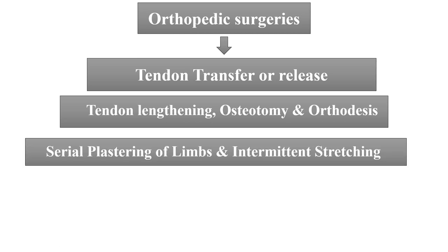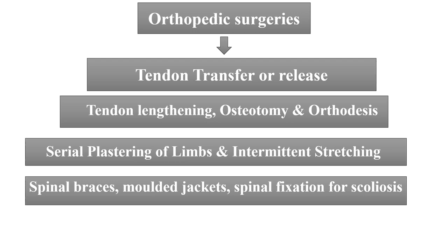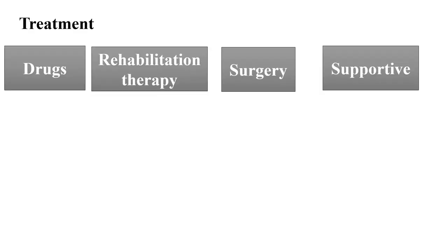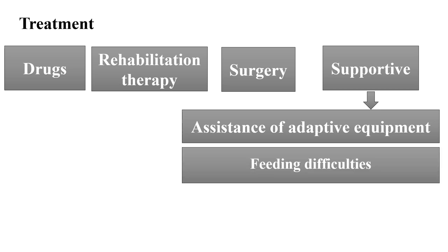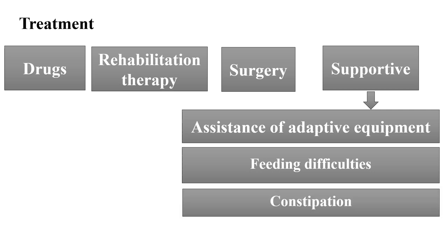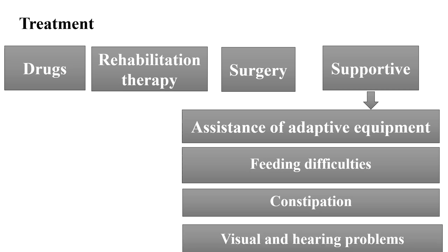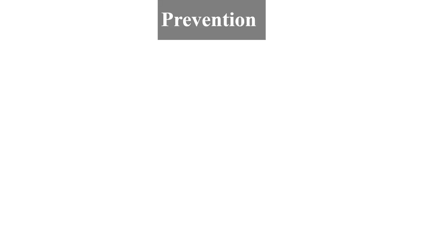Serial plastering of limbs, intermittent stretching, spinal braces, molded jackets, and spinal fixation for scoliosis are also done. In supportive therapy: use of adaptive equipment such as walker, prone standing frame to increase functional skills and prevent contracture. For feeding difficulties: upright position during and after feeds, thickening of feeds. For constipation: increased food intake, high fiber diet, and laxatives. For visual and hearing problems: ophthalmologist and ENT checkup should be done regularly.